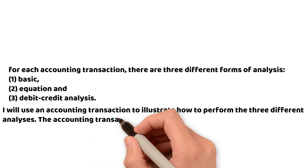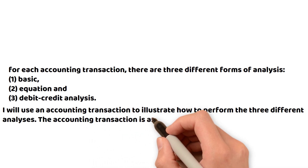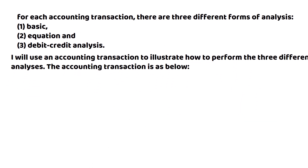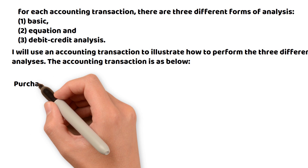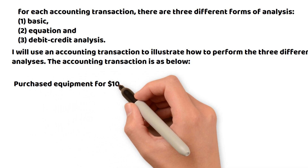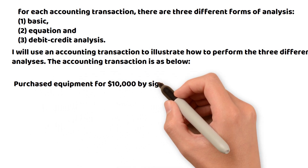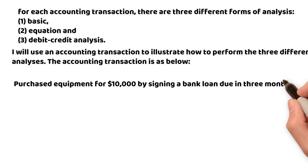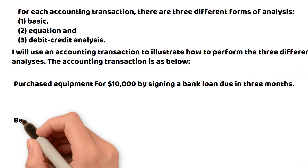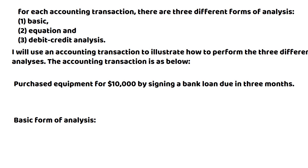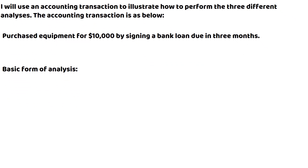The accounting transaction is as below: purchased equipment for ten thousand dollars by signing a bank loan due in three months. Let's see the basic form analysis.